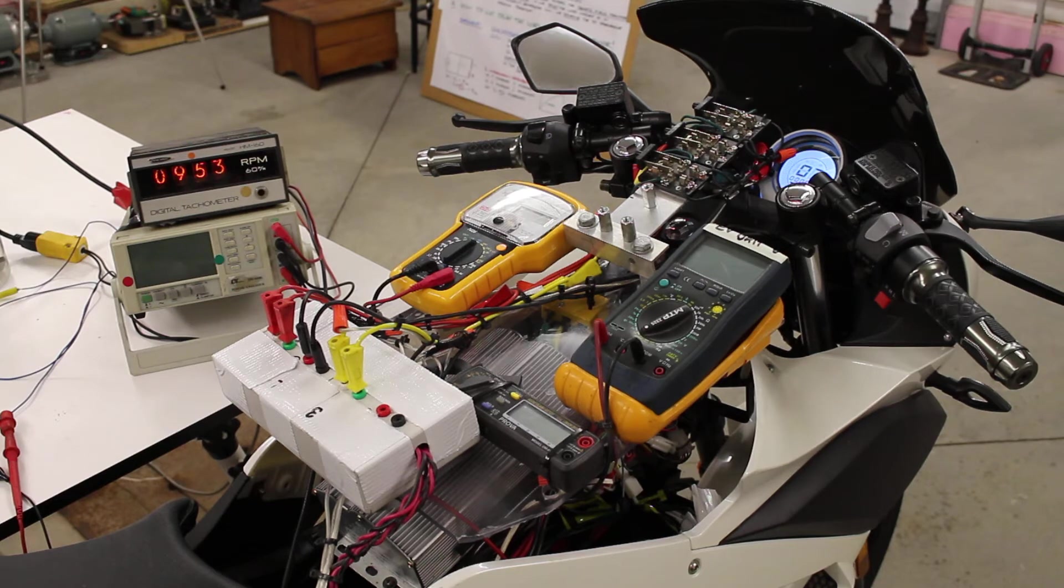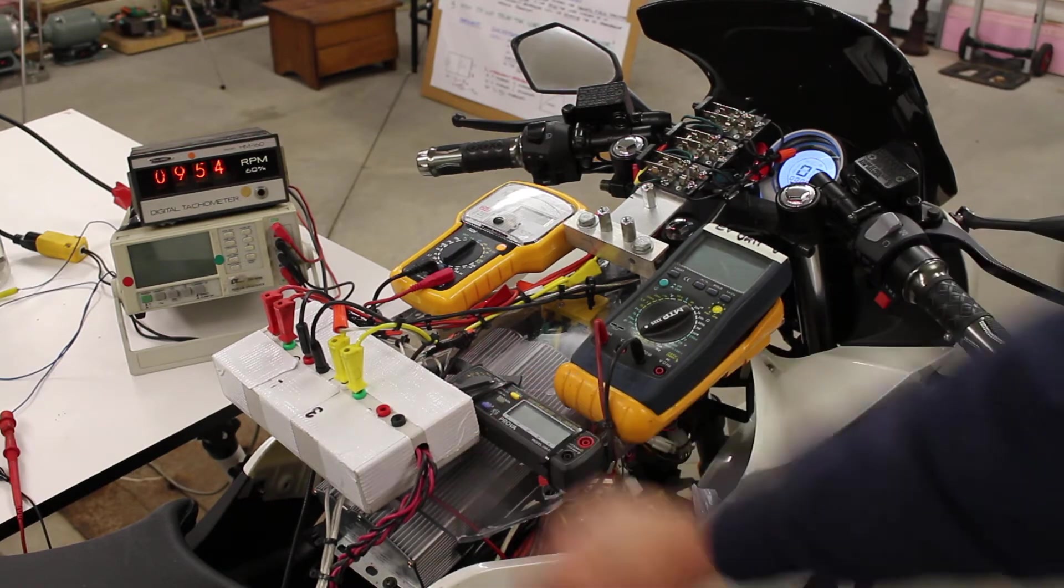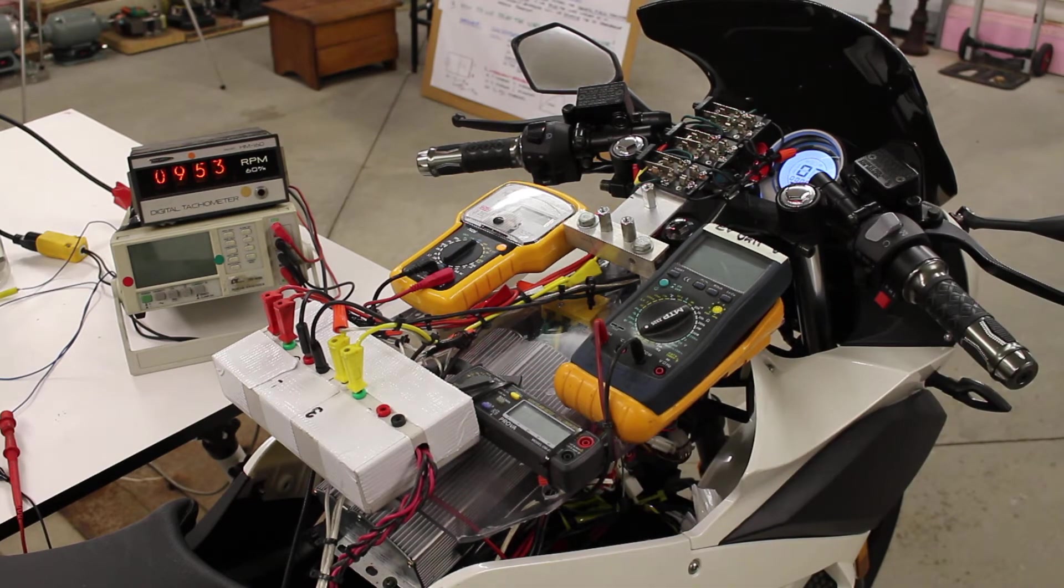Once we get to cruising speed, we're going to engage the RegenX generator and what you're going to see is the tachometer on the left hand side is going to increase. The more current that we send to the EV's batteries, the more regenerative acceleration we will provide.